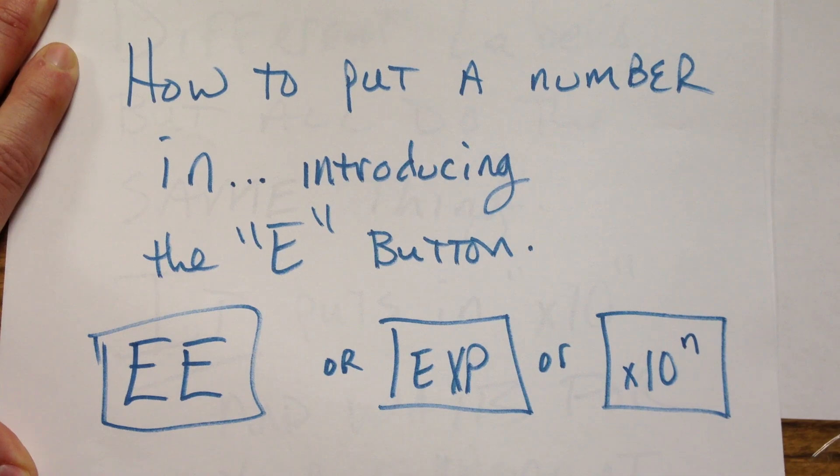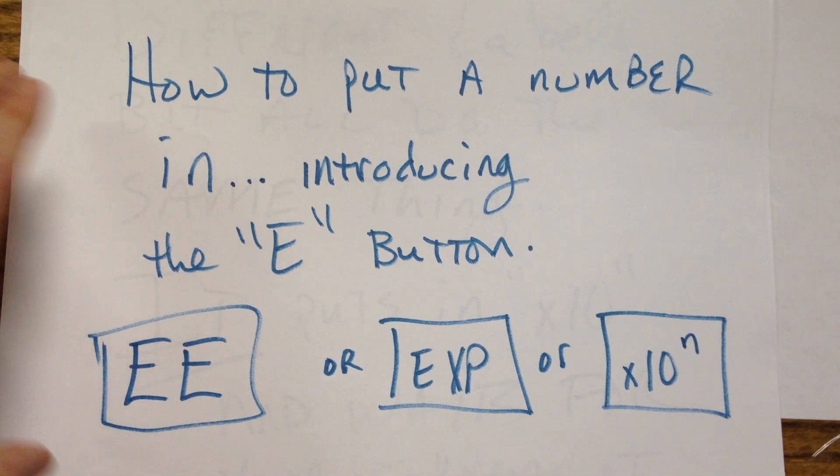Because I did not wish to teach you in the middle of a test how to use your calculator, I'm doing that now. I'd rather not do this again. So, the E button. The E button is going to look like one of these three things.